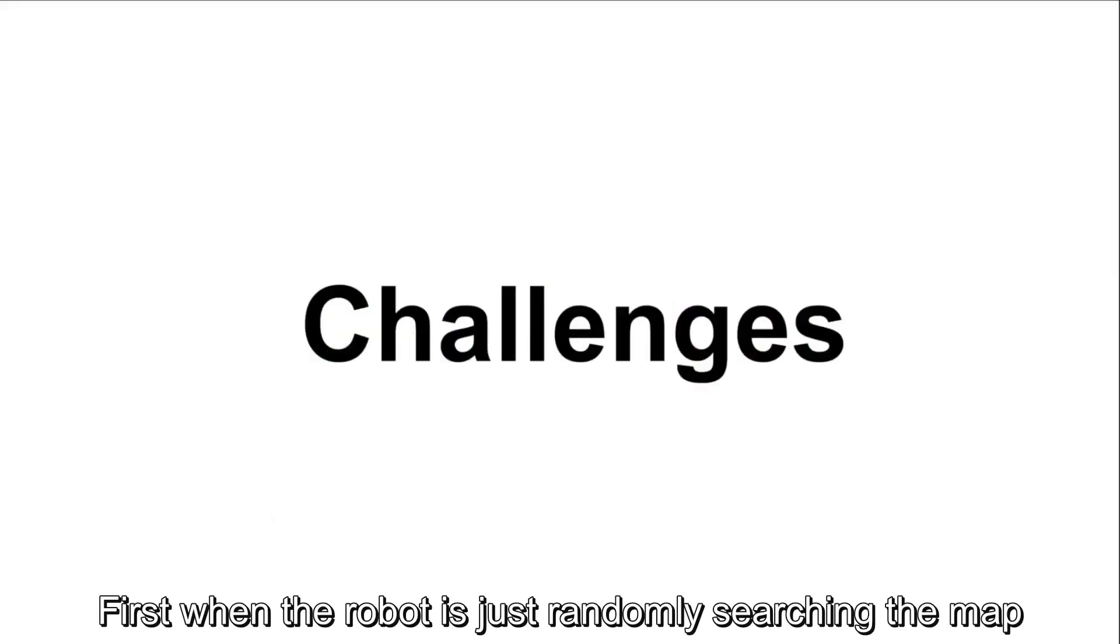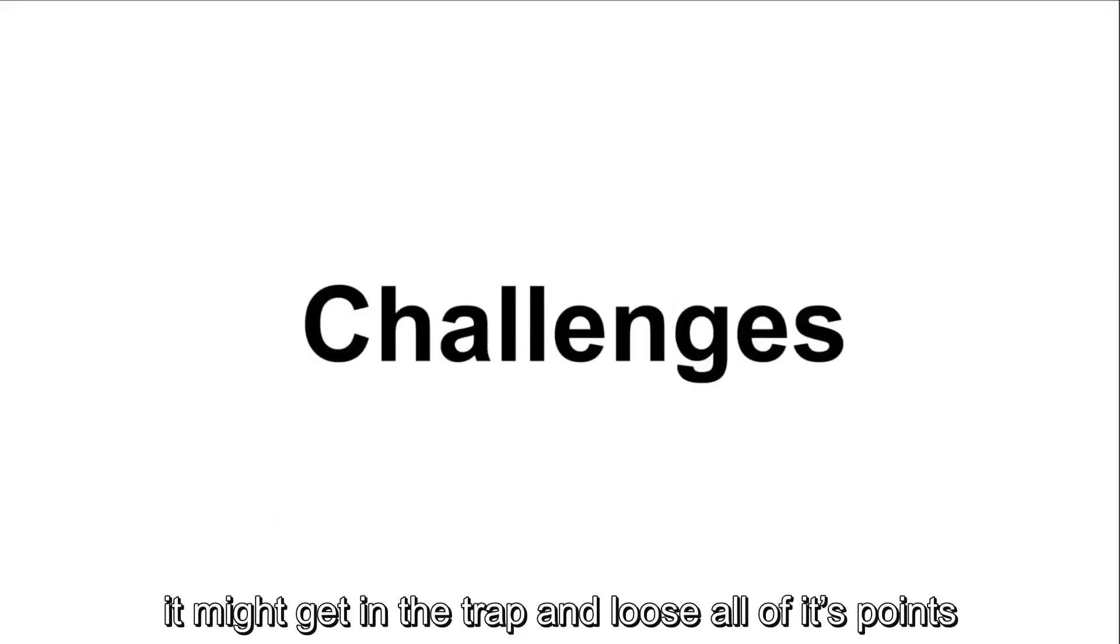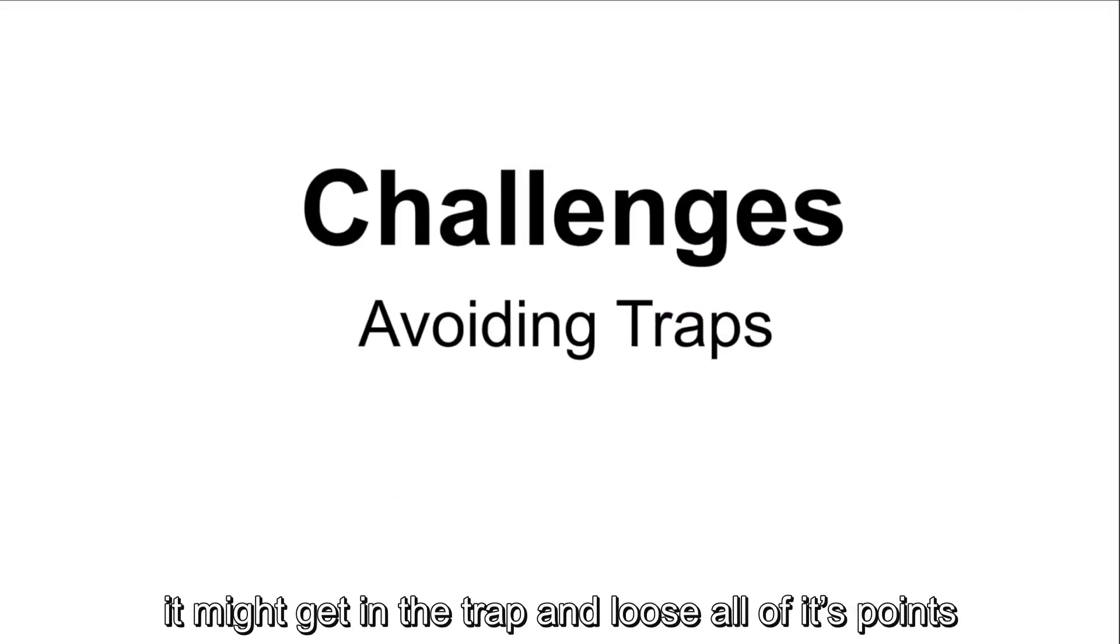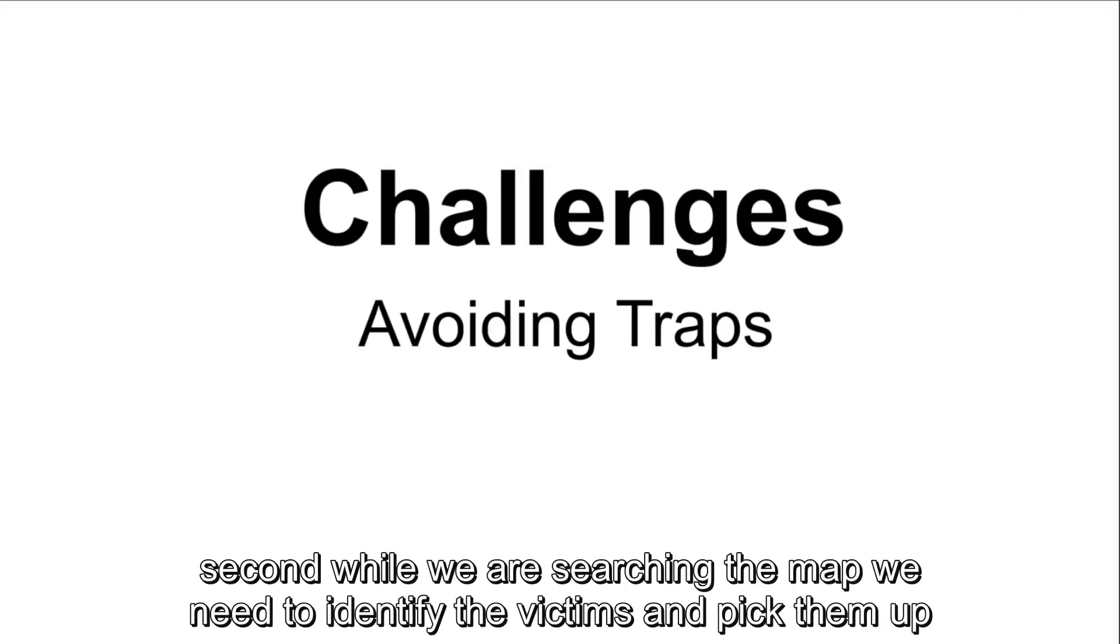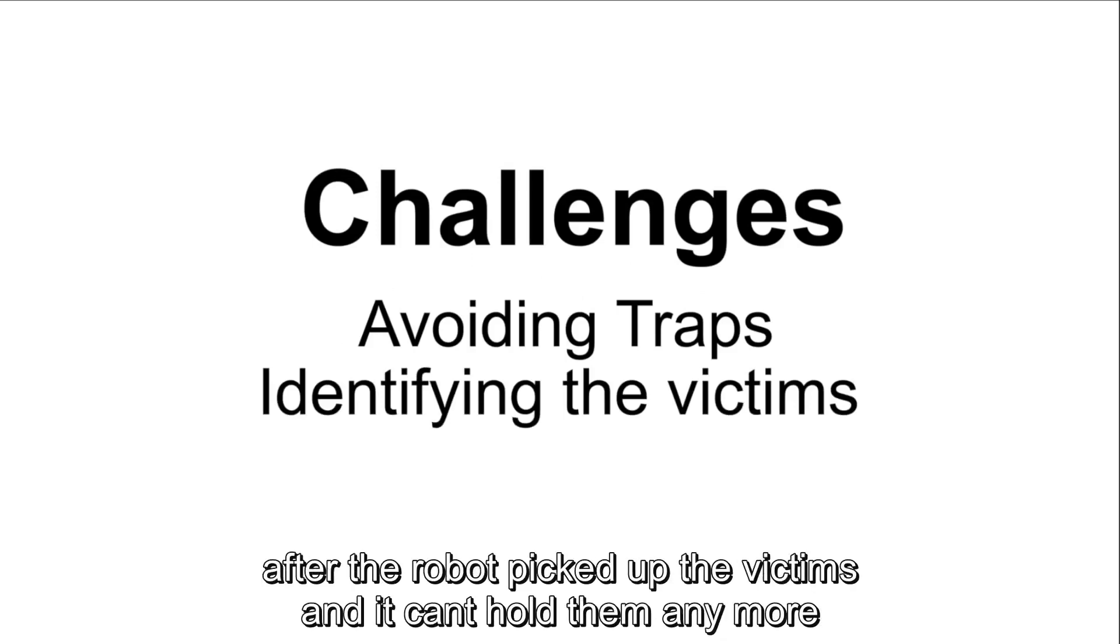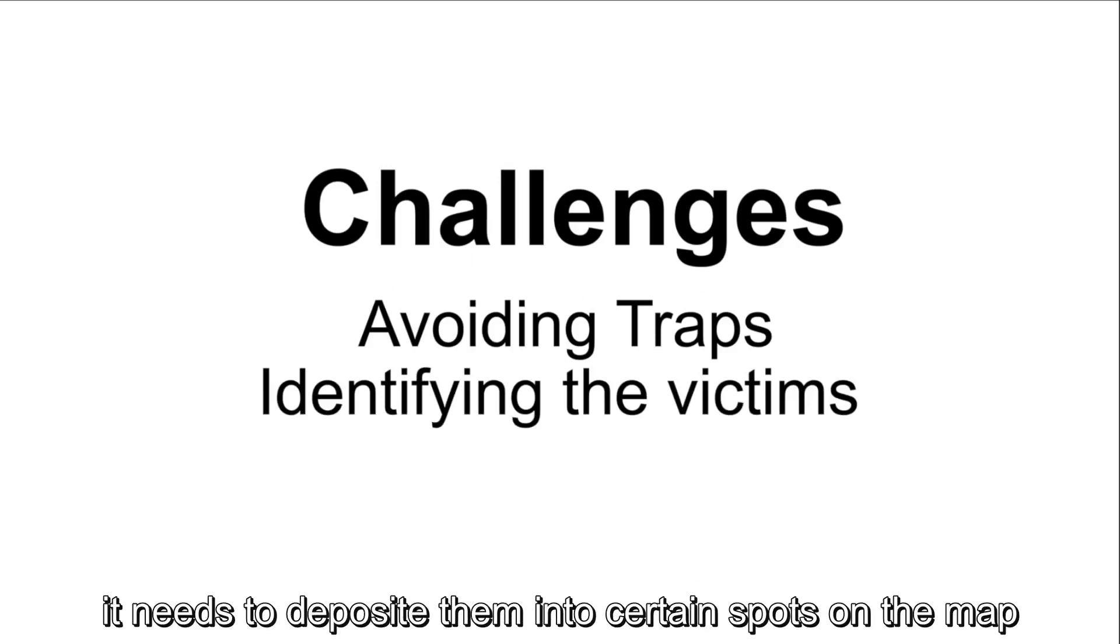First, when the robot is just randomly searching the map, it might get caught in a trap and lose all of its points. Second, while we are searching the map, we need to identify the victims and pick them up. After the robot has picked up the victims and it can't hold them anymore, it needs to deposit them in certain orange spots on the map.